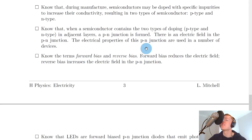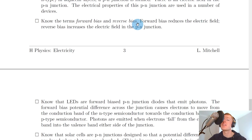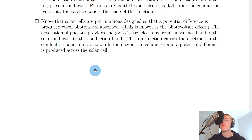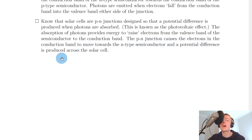The p-n junction is used in devices like LEDs and solar cells. You should know the terms forward bias and reverse bias: forward bias reduces the electric field in the p-n junction, whereas reverse bias increases it. LEDs are forward biased p-n junction diodes that emit photons. The forward bias potential difference causes electrons to move from the conduction band of the n-type semiconductor towards the conduction band of the p-type semiconductor, and photons are emitted when electrons fall from the conduction band into the valence band either side of the junction. Solar cells are p-n junctions designed so that a potential difference is produced when photons are absorbed — this is known as the photovoltaic effect. The absorption of photons raises electrons from the valence band to the conduction band, the p-n junction causes electrons to move towards the n-type semiconductor, and a potential difference is produced across the cell.